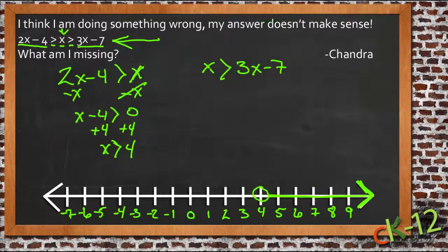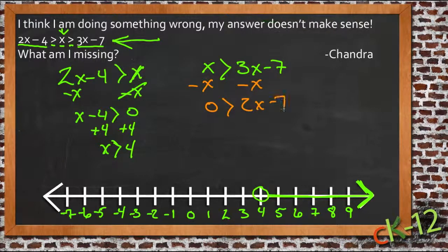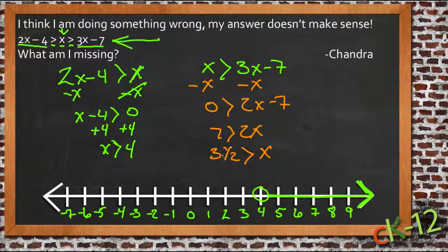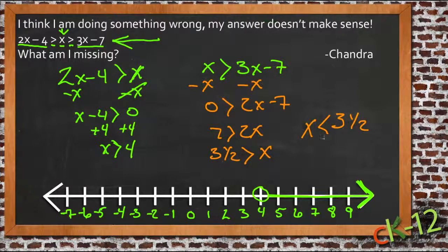Here we have 1x on this side and 3x is on this side, so let's collect the x's on the right. So we'll subtract x from both sides, we'll get 0 > 2x - 7. Add 7 to both sides, we'll have 7 > 2x, and then divide both sides by 2 and we'll get 3.5 > x. Now if 3.5 is greater than x, that means x is less than 3.5, right? So we can actually write that in the other order just so it's easier to visualize: x < 3.5.